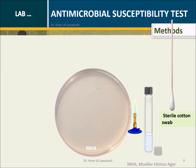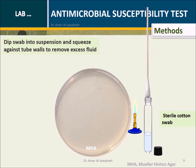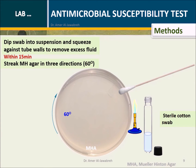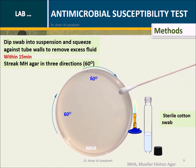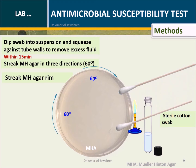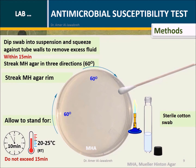Method: Dip the swab into the suspension and squeeze against the two bolts to remove excess fluid. Within 15 minutes, streak the Mueller-Hinton Agar in three directions. Restrict the Mueller-Hinton Agar rim, then allow to stand for 10 minutes at room temperature. Do not exceed 15 minutes.